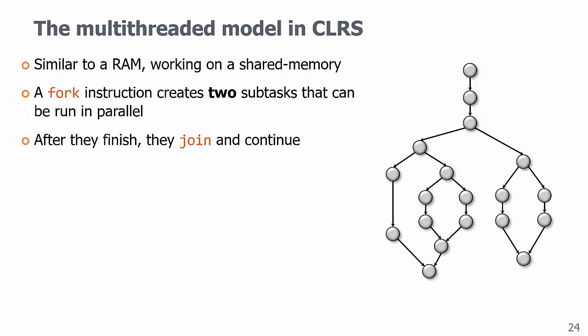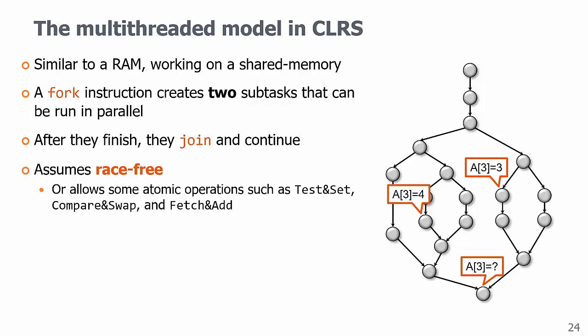The CLRS version assumes race-free, that allows the parallel instructions to access the same memory location in a certain way. Alternatively, many algorithms use test and set, compare and swap, and fetch and add to access the same memory location atomically.